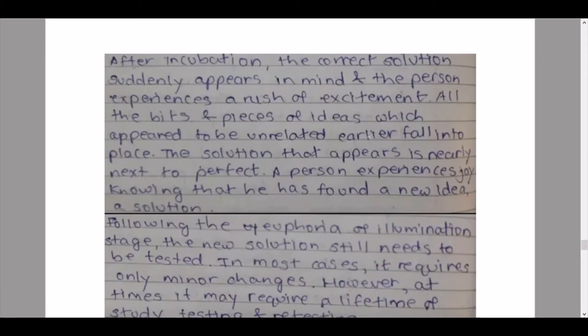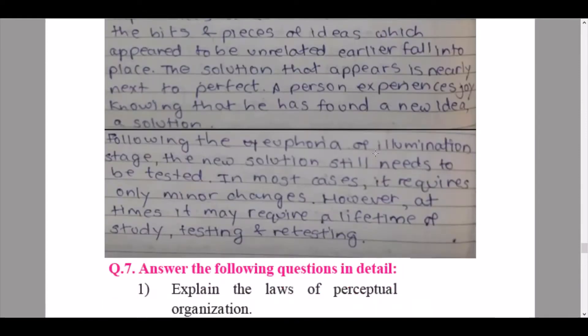The solution that appears is nearly perfect. A person experiences joy knowing that he has found a new idea, a new solution. Following the euphoria of illumination stage, the new solution still needs to be tested, so this is the verification stage. In most cases it requires only minor changes, however at times it may require a lifetime of study, testing and retesting.